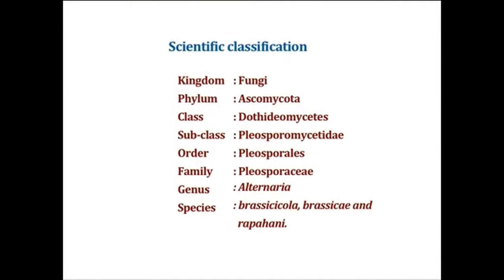Scientific classification of the leaf spot pathogen: Kingdom Fungi, Phylum Ascomycota, Class Dothideomycetes, Subclass Pleosporomycetidae, Order Pleosporales, Family Pleosporaceae, Genus Alternaria, Species brassicicola, brassicae, and raphani.